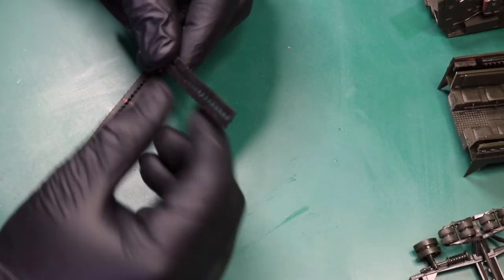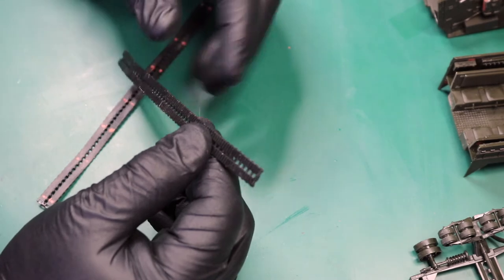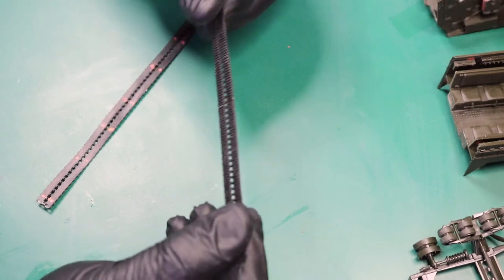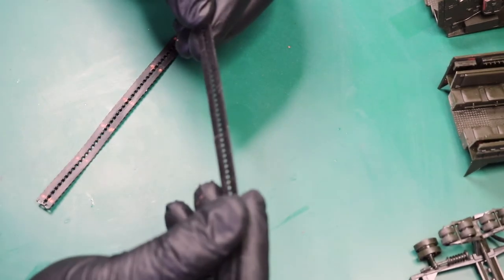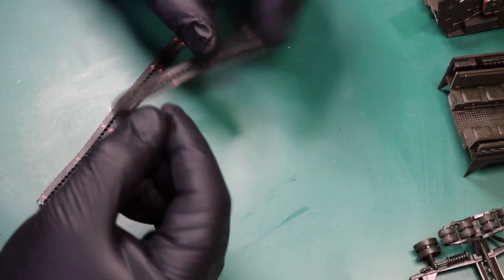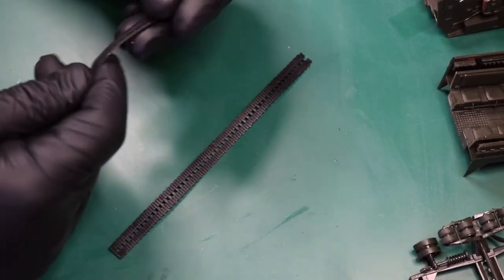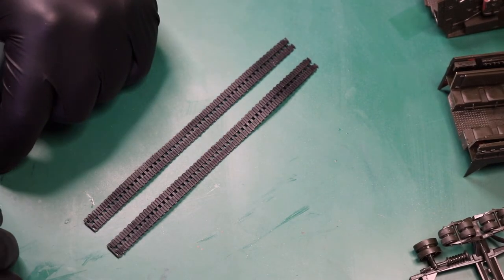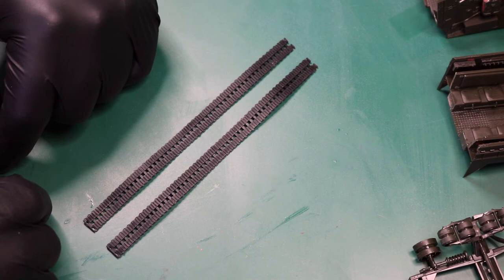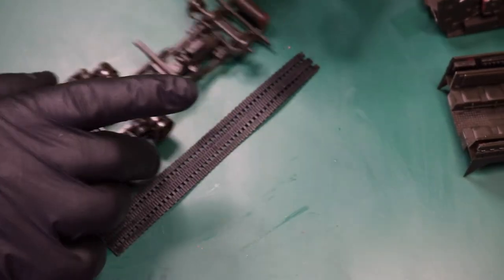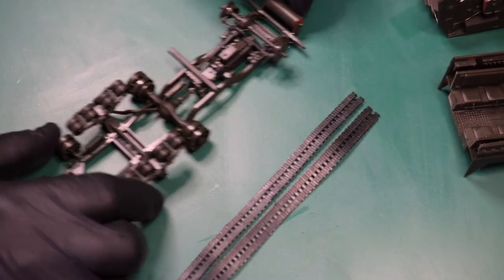If you guys know of any technique where I could stretch them out - somebody suggested hot water - but I want to just have a little bit more length so I could put them on and weather them separately. If not, I'm gonna have to just put them on and deal with it. That's just one of the flaws of this kit. The vinyl tracks are just awful. The length is just too tight.